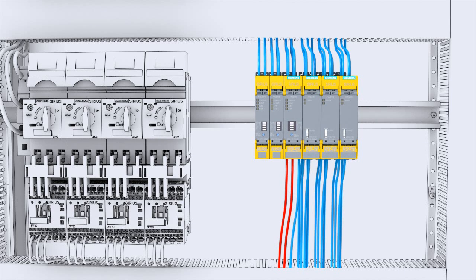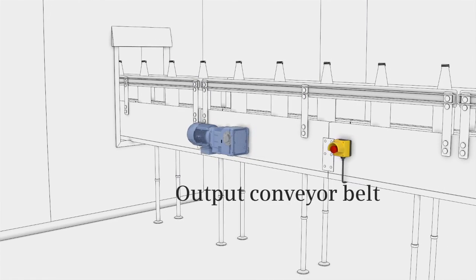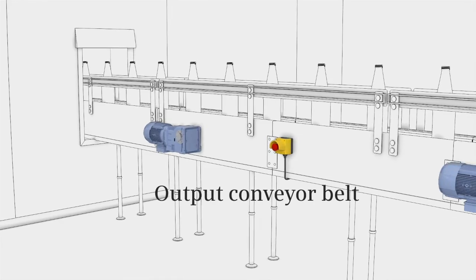Take a closer look. For protective door monitoring, you take a basic device and expand it on the left with two input expansions for the emergency stop connection and on the right with three output expansions to shut off the motors. In this way, the output conveyor belt with the filled bottles is also reliably protected.